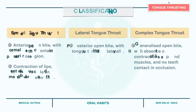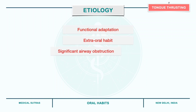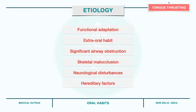There can be several etiologic factors that may cause tongue thrusting. These include functional adaptation seen during mixed dentition phase or in adults with anterior spacing or anterior open bite. Extraoral habits such as prolonged thumb sucking or finger sucking. Significant airway obstruction with habitual mouth breathing. Skeletal malocclusion such as class 2 div 1 cases. Neurological disturbances such as hypotensive palate, moderate motor disability, disruption of sensory control, and hereditary factors such as inherited hyperactivity of orbicularis oris.